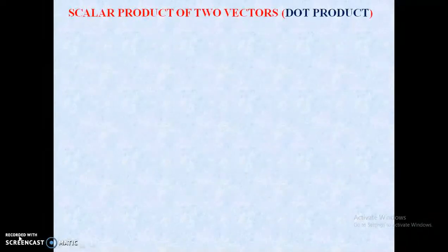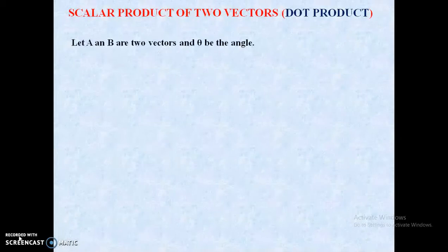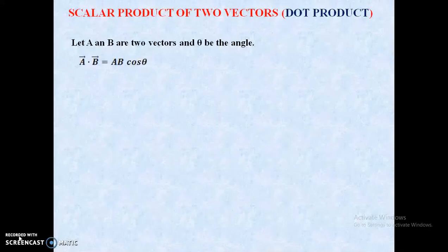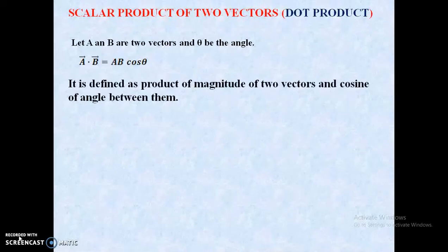Next, scalar product of two vectors, also called the dot product. Let A and B be two vectors, and let the angle between these two vectors be theta. It is represented as A-vector dot B-vector equals A·B·cos(theta). This means it is defined as the product of the magnitudes of the two vectors, A and B, and the cosine of the angle between them, cos(theta).